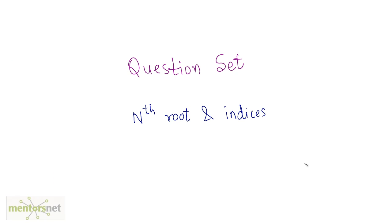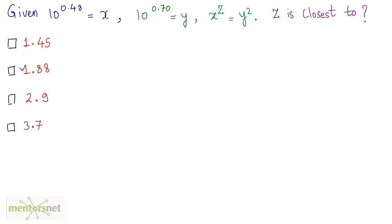Let us solve some more questions that use the laws of indices and the laws of nth roots. Starting with the first question, you have been given the values of x and y and the relation between x and y, so what is the value of z that is closest to?